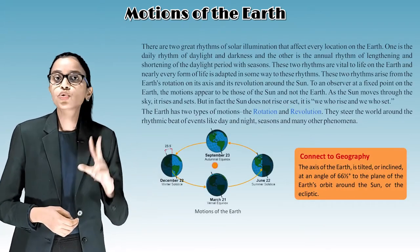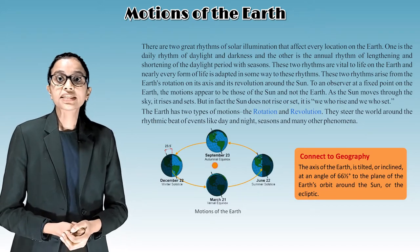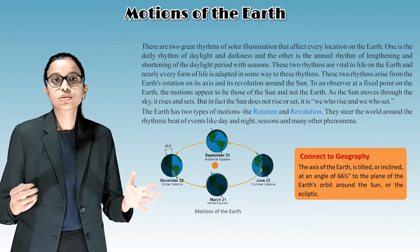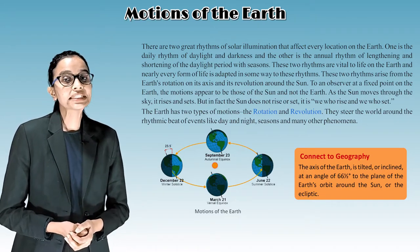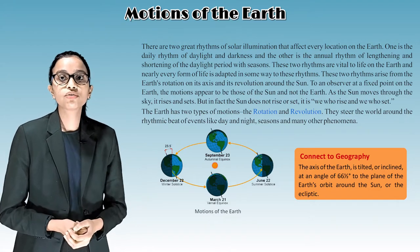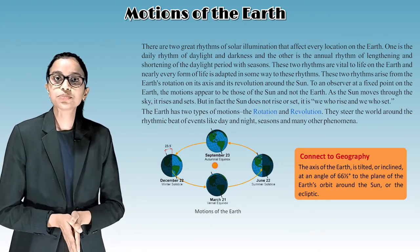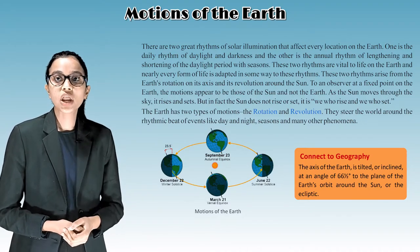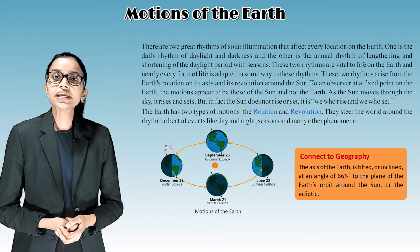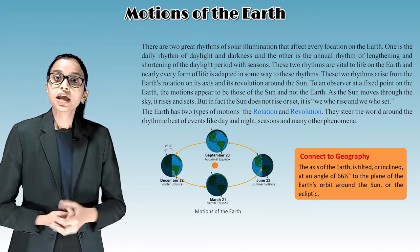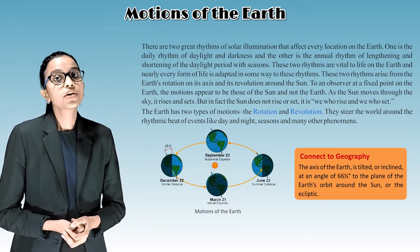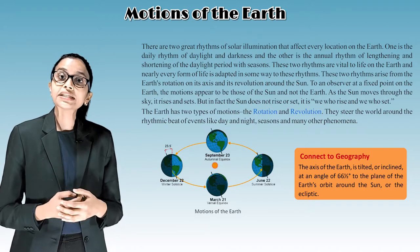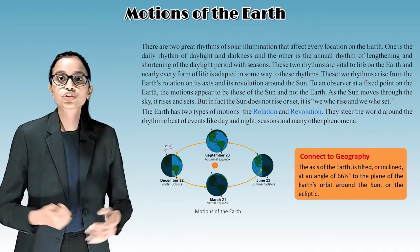There are two great rhythms of solar illumination that affect every location on the earth. One is the daily rhythm of daylight and darkness, and the other is the annual rhythm of lengthening and shortening of the daylight period with seasons. These two rhythms are vital to life on the earth and nearly every form of life is adapted in some way to these rhythms. These two rhythms arise from the earth's rotation on its axis and its revolution around the sun.